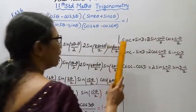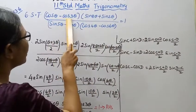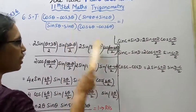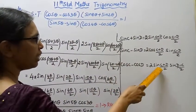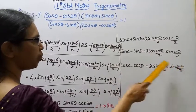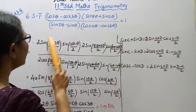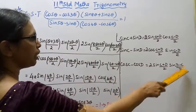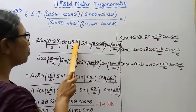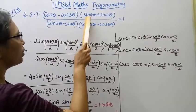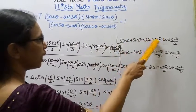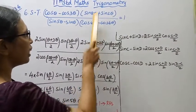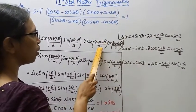First, cos C minus cos D: where C is theta and D is 3 theta. This gives 2 sin((C plus D) by 2) into sin((D minus C) by 2), which is 2 sin((theta plus 3 theta) by 2) into sin((3 theta minus theta) by 2). For sin C plus sin D, we use 2 sin((C plus D) by 2) cos((C minus D) by 2).